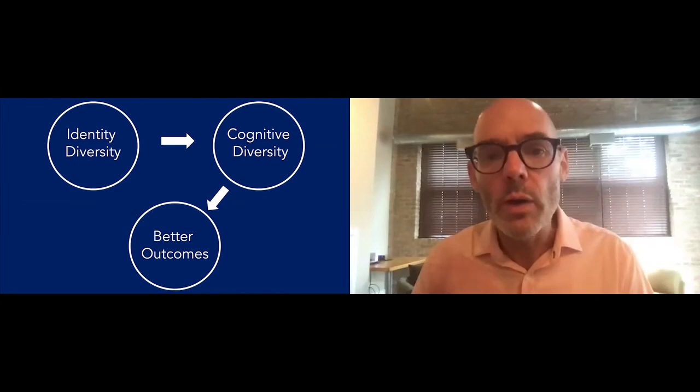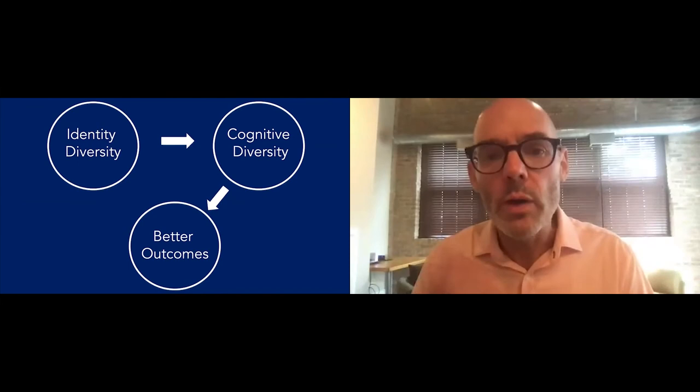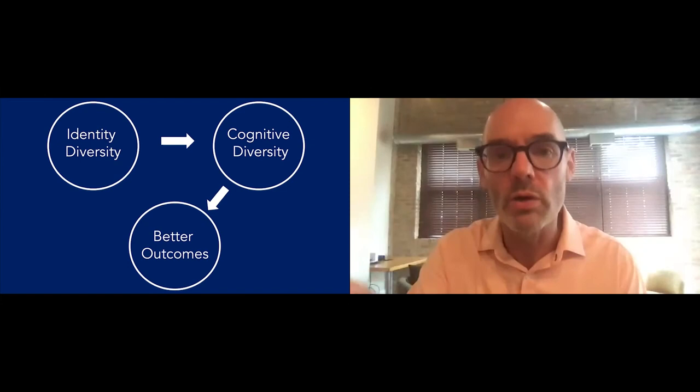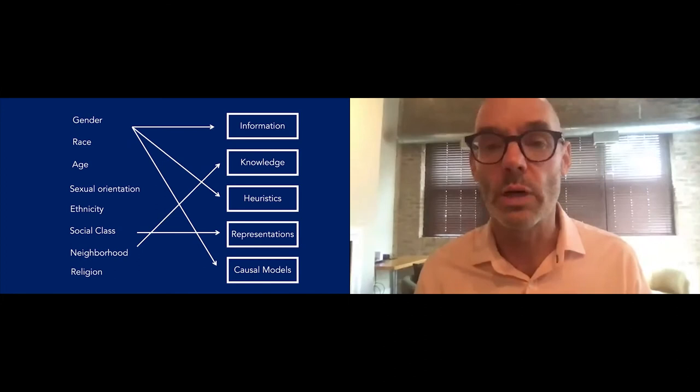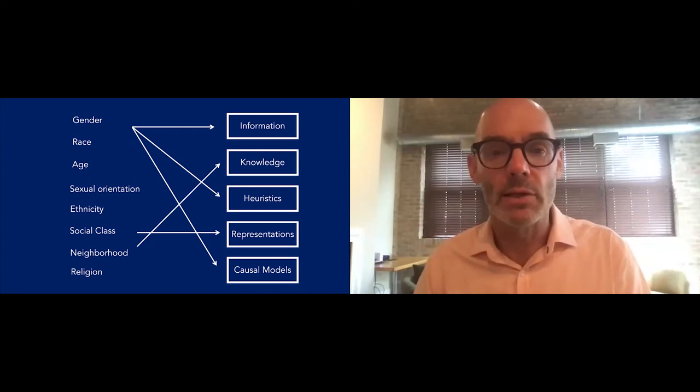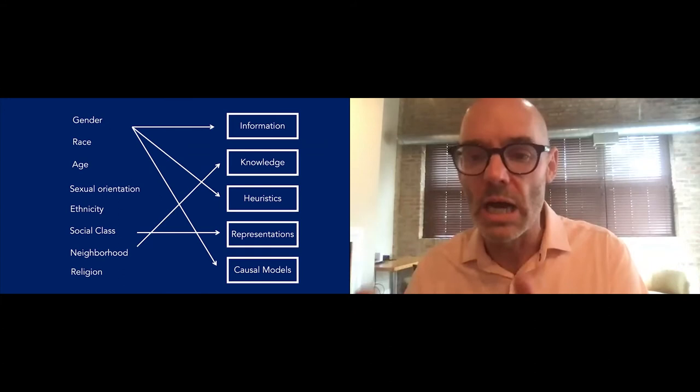Why does identity diversity matter? One way to think about why identity diversity matters is that identity diversity probably correlates with, not causes, but correlates with cognitive diversity. And we know cognitive diversity gives better outcomes. Here's where it gets tricky. How I thought about this has completely changed over the last 15, 20 years. I came at this purely mathematically. I'm a mathematical economist at Caltech thinking about a problem solving economy. I've got models with information, knowledge, heuristics, representations, causal models.